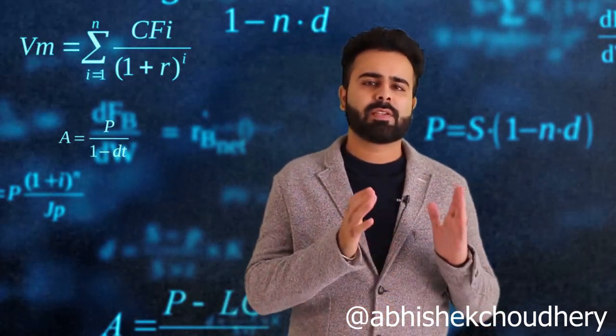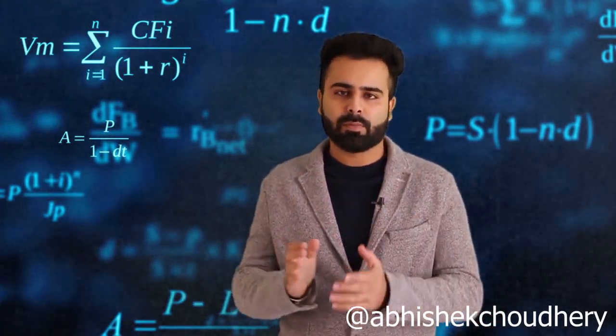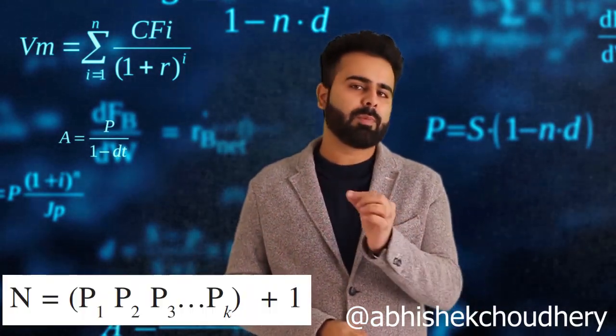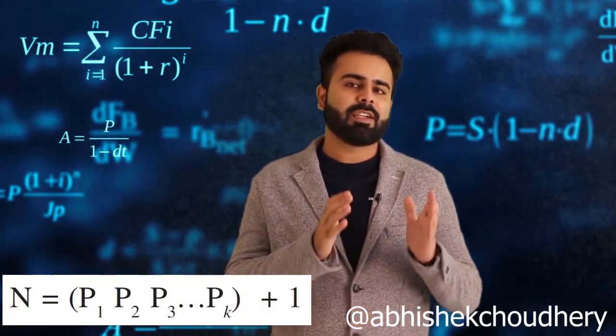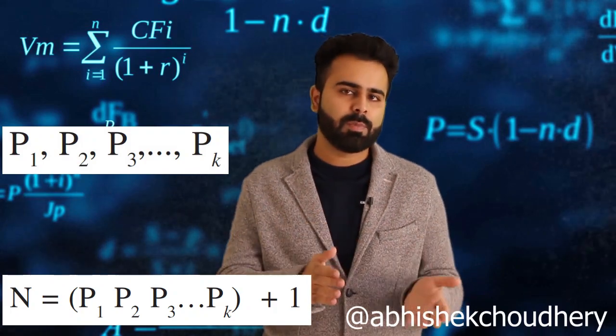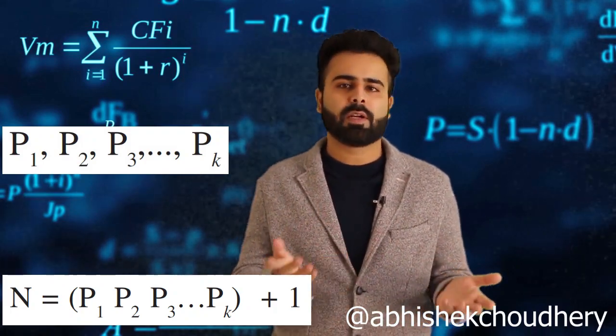Let's consider the first case where N is prime. We know N is larger than all those prime numbers P1 up till Pk, and the set of prime numbers is finite, which means there is no prime number larger than Pk. Since N is larger than Pk and there is no prime number larger than Pk, N cannot be prime.